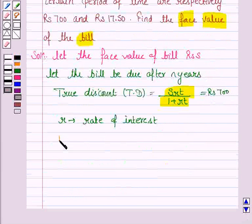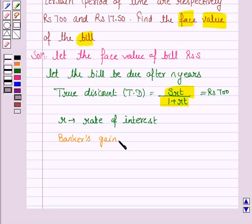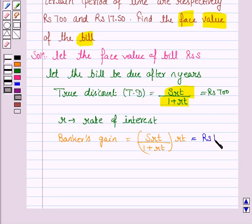Also, banker's gain is given by the formula S into R into T upon 1 plus R into T, into R into T. And this is given to be rupees 17.50.